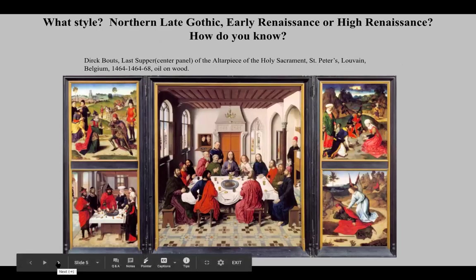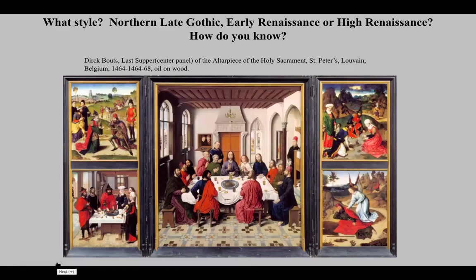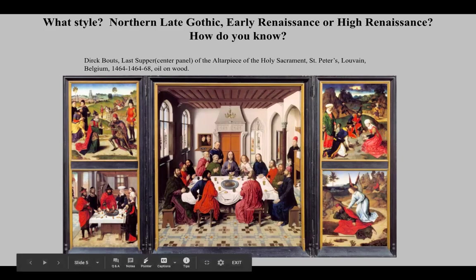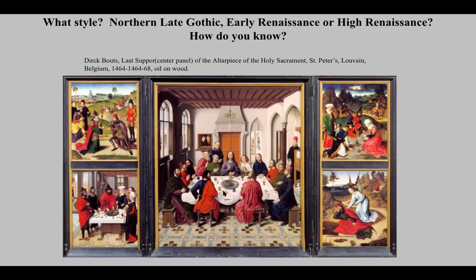Without spending too much time on other works outside of Leonardo's, the Last Supper was a very typical scene. Here we have a northern Early Renaissance painting by Dirk Bouts — similar to the Mérode Altarpiece with all its symbolism. Notice how the floor is tilted with a high horizon, allowing us to see all the people around the table. This painting shows the solemn moment of Jesus saying the bread is his body and the wine is his blood.